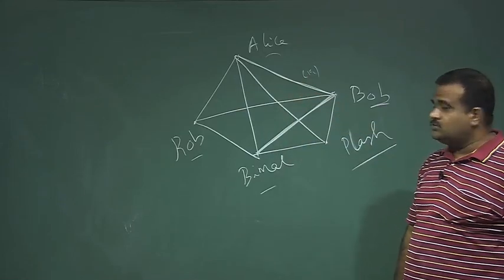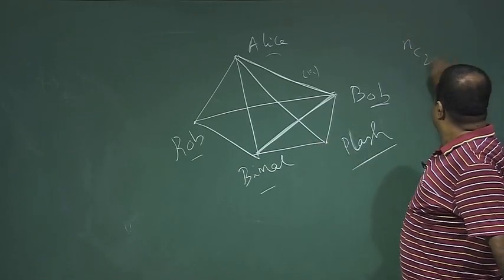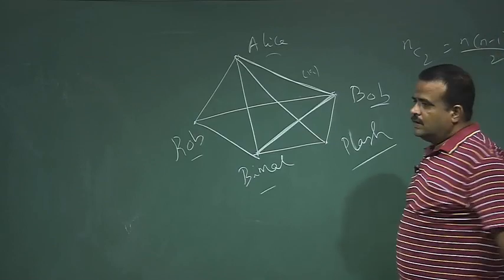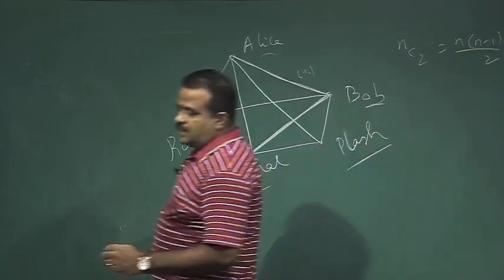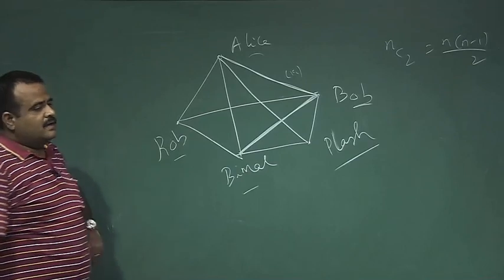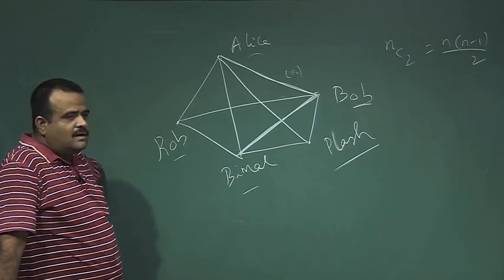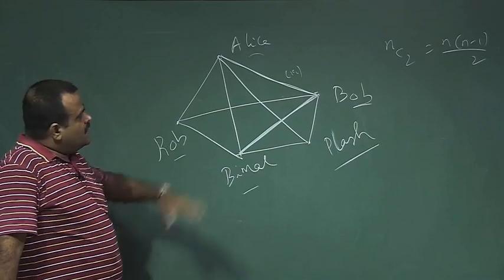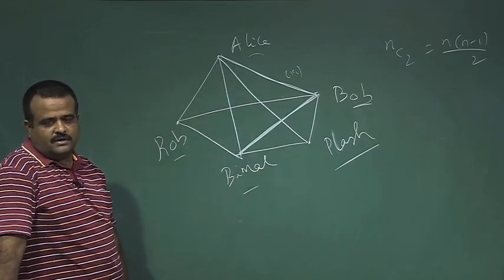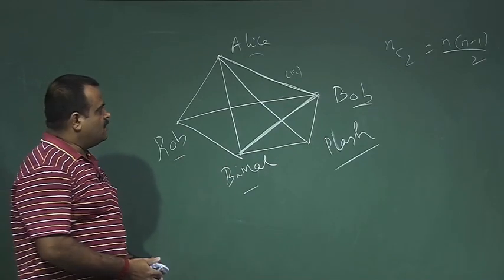For all edges in the network, we need different keys. That means we need n-choose-2 keys — each edge requires a secret key. This is a major drawback of the symmetric key system: we have to maintain this many symmetric keys.